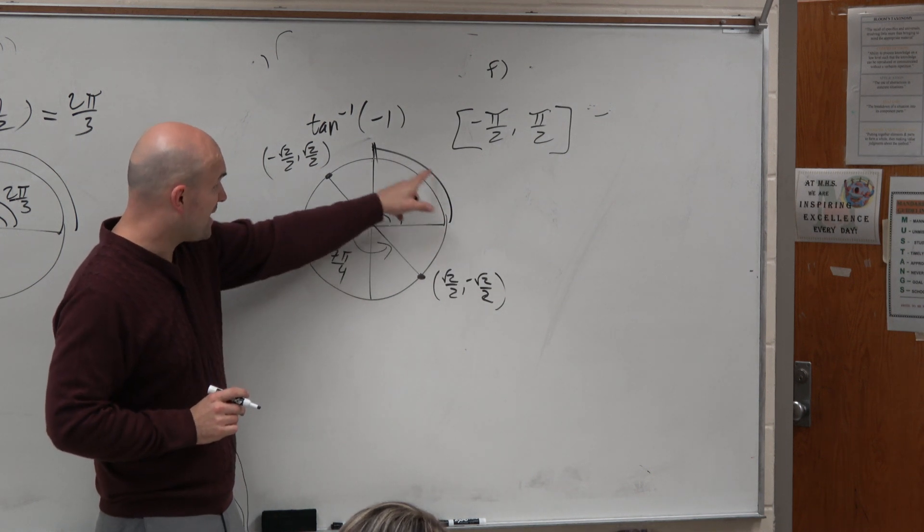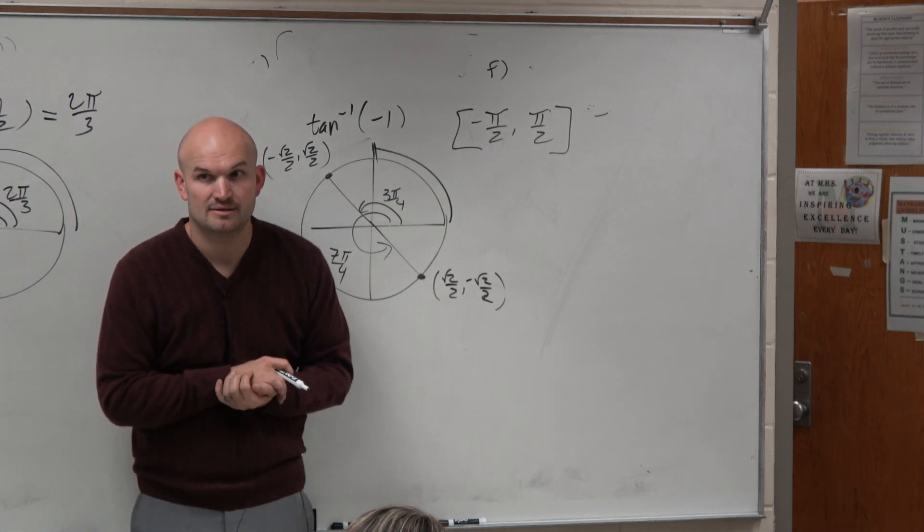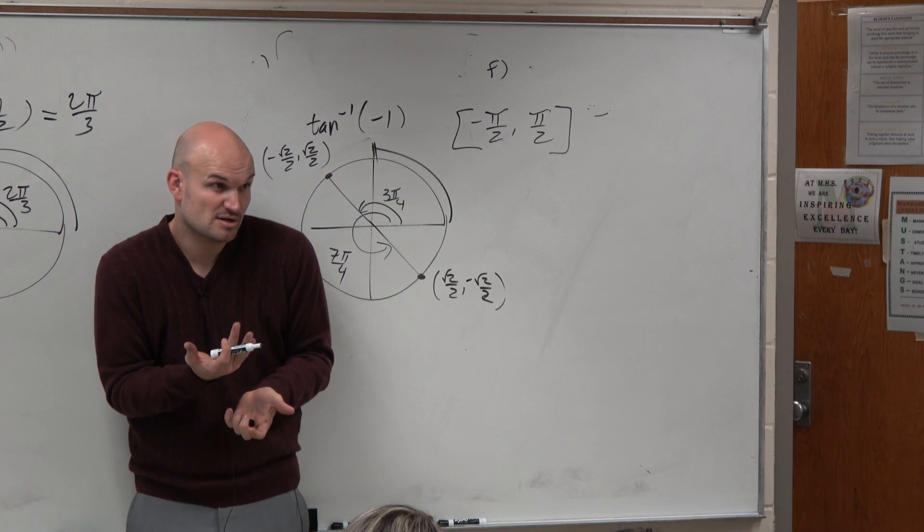And then, of course, 7 pi over 4 is bigger than 3 pi over 4. So neither of these answers fit our restriction. So should we just say no real answers, undefined? It makes sense. Nothing works, right?